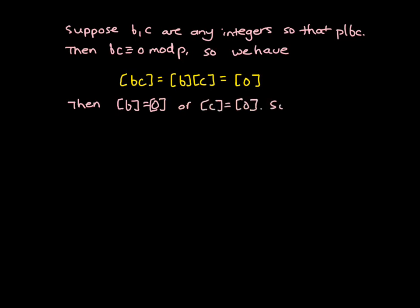And so what does this mean? This means that b is congruent to 0 mod p or c is congruent to 0 mod p. Thus p divides b or p divides c. And so that's precisely what we need to say that p is prime.